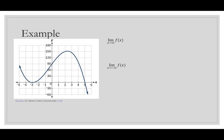Infinity is the right side. As we move along this function, as x gets bigger and bigger, f(x) is getting smaller and smaller. So when x goes to infinity, f(x) goes to negative infinity. On the left side, when x goes to negative infinity, we trace along the function and as x gets smaller, f(x) goes back up — it goes to positive infinity.